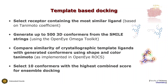We compare the shape of those 500 generated conformations with the shape of the ligand in our template receptor using OpenEye ROCS, matching shapes and pharmacophore models. We select the 10 best conformers with the highest combined score. These 10 conformers are given to HADDOCK for ensemble docking, starting from multiple conformations of the ligand.